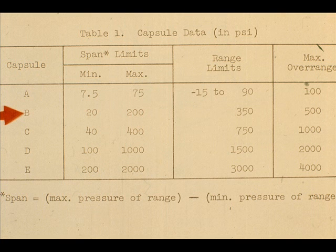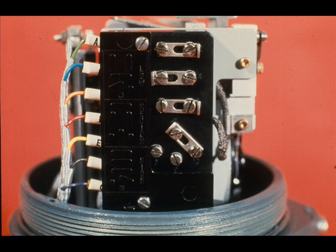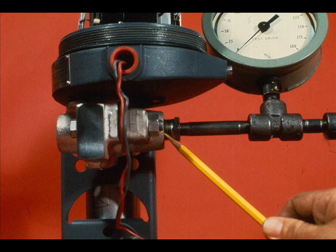Can we calibrate capsule B to 0 to 200 PSIG? The answer is yes. The maximum span is 200 PSIG and the range limits are minus 15 to 350 PSIG. For capsule B, the spans from 100 up to 200 PSIG require the high link arrangement.